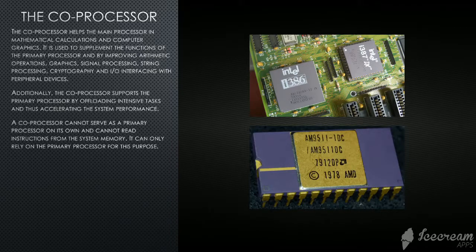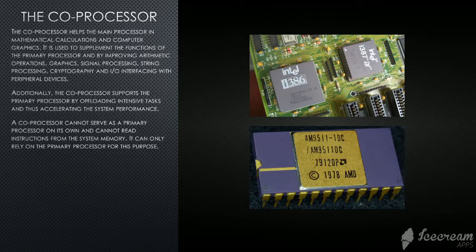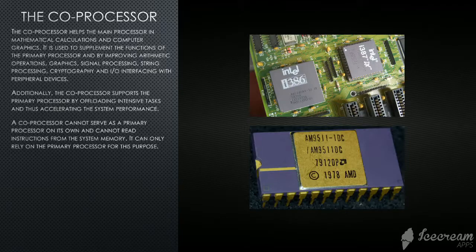It is used to supplement the functions of the primary processor, or the CPU, by improving arithmetic operations, graphics, signal processing, string processing, cryptography, and input and output interfacing with peripheral devices. Additionally, the coprocessor supports the primary processor by offloading intensive tasks and thus accelerating the system performance.